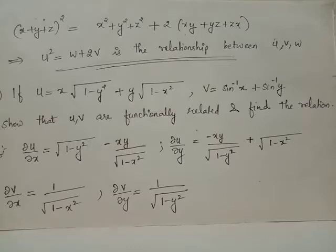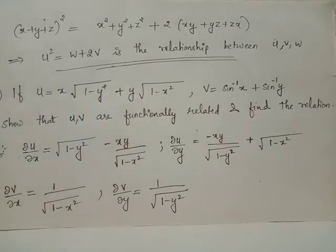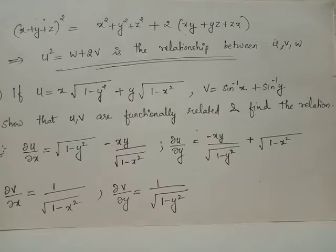We have ∂u/∂x, which is the partial derivative of u with respect to x treating y as a constant. Thus ∂u/∂x equals root of 1 minus y squared minus xy divided by root of 1 minus x squared.